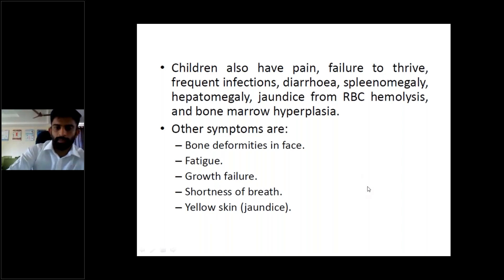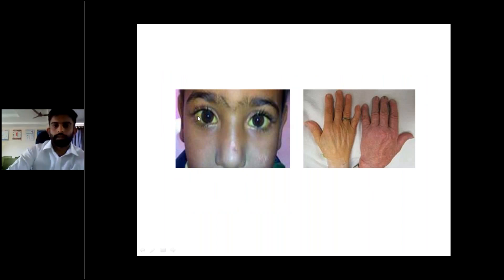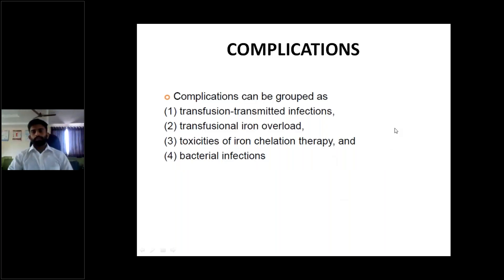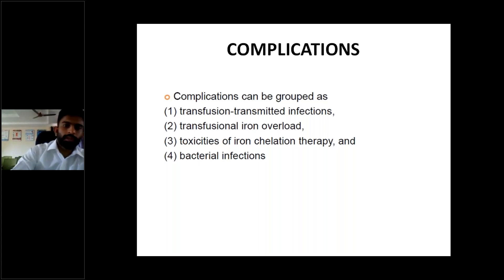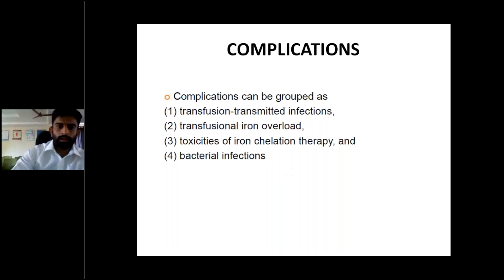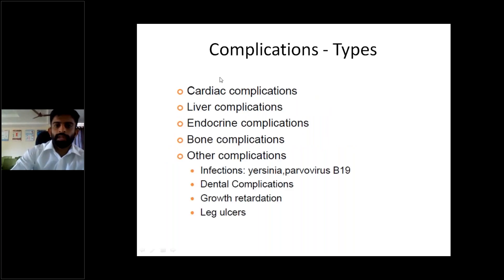Shortness of breath can occur because of anemia, and yellow skin — jaundice — can be seen with icterus in the sclera and palms, along with pallor. Complications of thalassemia can be grouped as: transfusion-transmitted infections; transfusion-related iron overload; toxicity of iron chelation therapy; and bacterial infections. These manifest as cardiac abnormalities, endocrine abnormalities, bone abnormalities, and others. Other complications include infections with parvovirus B19, dental complications, growth retardation, and leg ulcers.